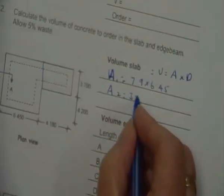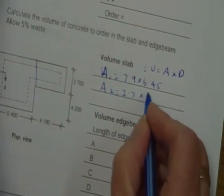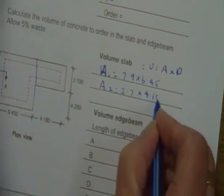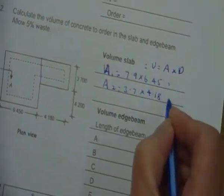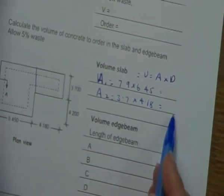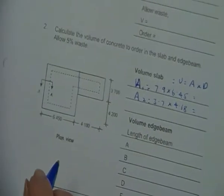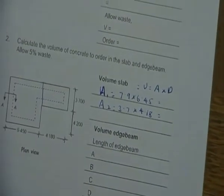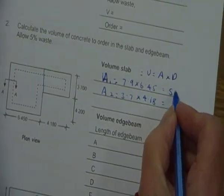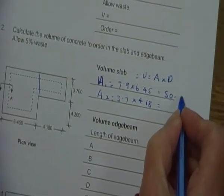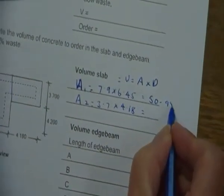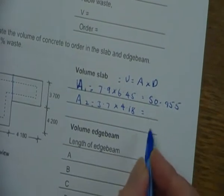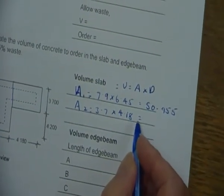Area 2 is going to be: my length is going to be 3.7 by 4.18. You need to get an answer for each of those. If you could do the calculations on that for me please.